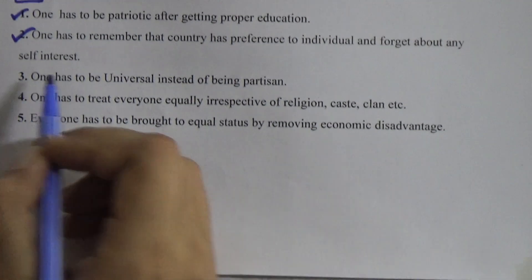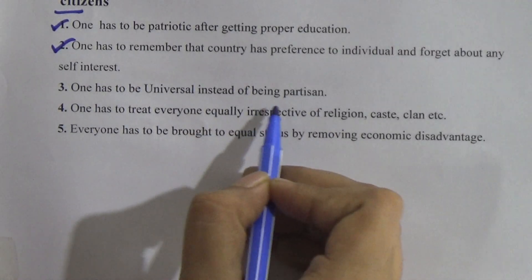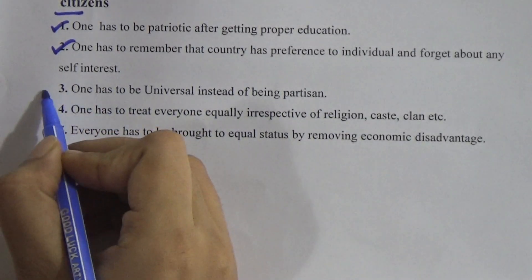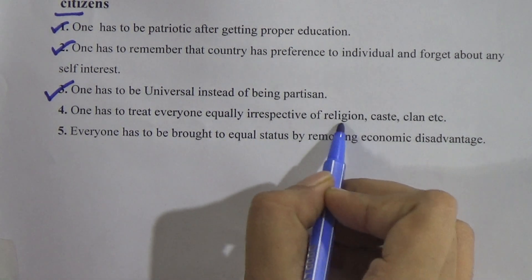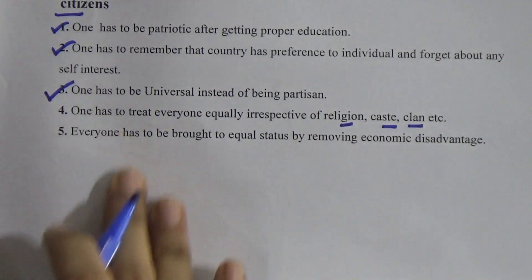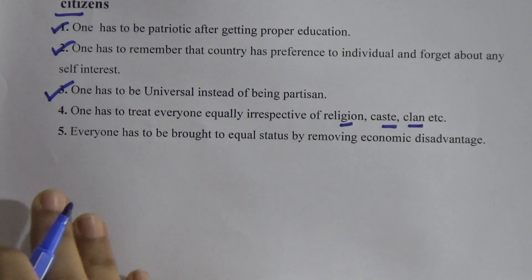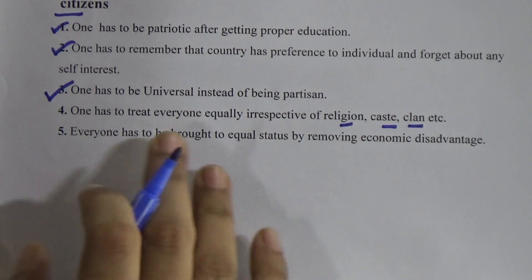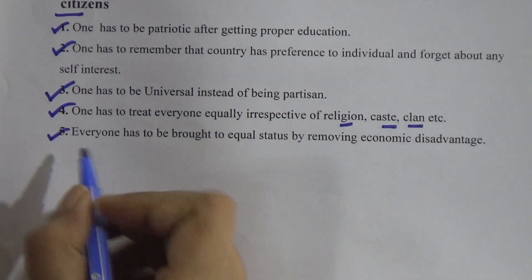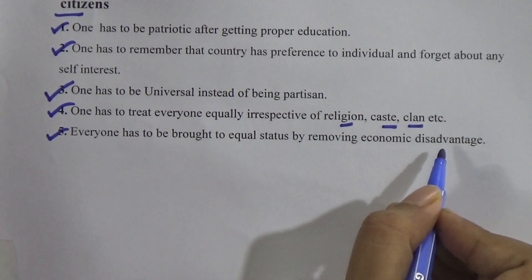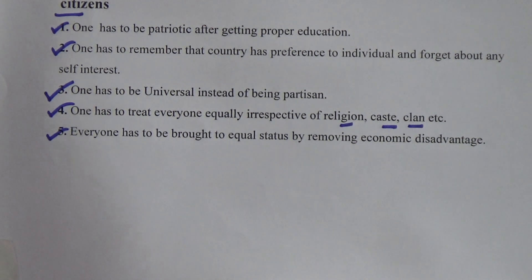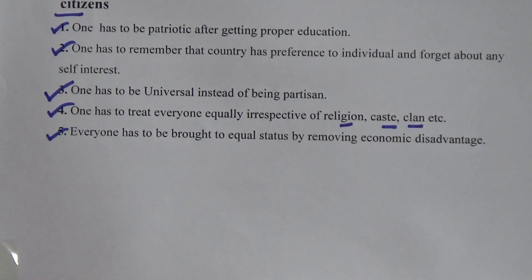We have to forget any kind of self-interest. One has to be universal instead of being partisan. We have to be universal. One has to treat everyone equally irrespective of religion, caste, and claim. Everyone has to be brought to equal status by removing economic disadvantages. As we know, we have lots of economic disadvantages. If we can remove the economic disadvantage, we can bring equal status to our country.